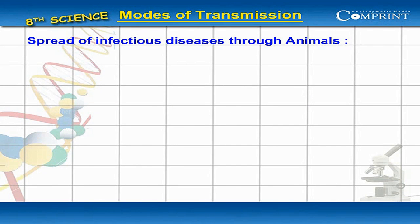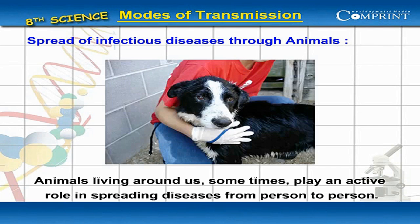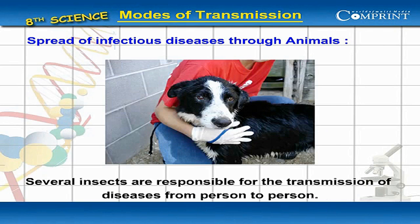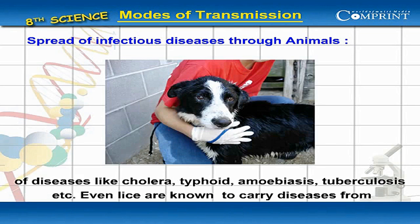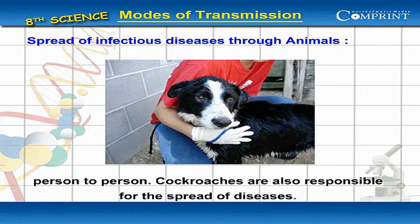Spread of infectious diseases through animals: animals living around us sometimes play an active role in spreading diseases from person to person. Mosquitoes are responsible for the transmission of malaria, filaria, and others. Flies are responsible for diseases like cholera, typhoid, amoebiasis, and tuberculosis. Lice are also known to carry diseases, and cockroaches are responsible for the spread of disease as well.